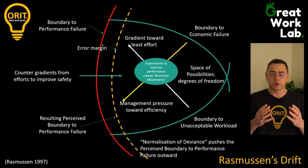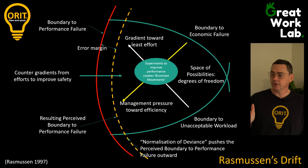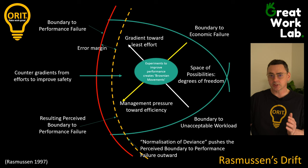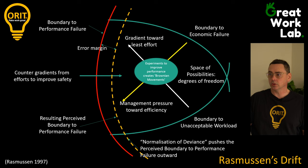This is where the drifting occurs. Normalization of deviance pushes the perceived boundary of performance failure outwards towards the actual boundary of performance failure. As we get closer and closer to that boundary and normalize more deviance, the error margin gets smaller and smaller until we have an accident. We cross the boundary, push back a little, and learn from the accident.